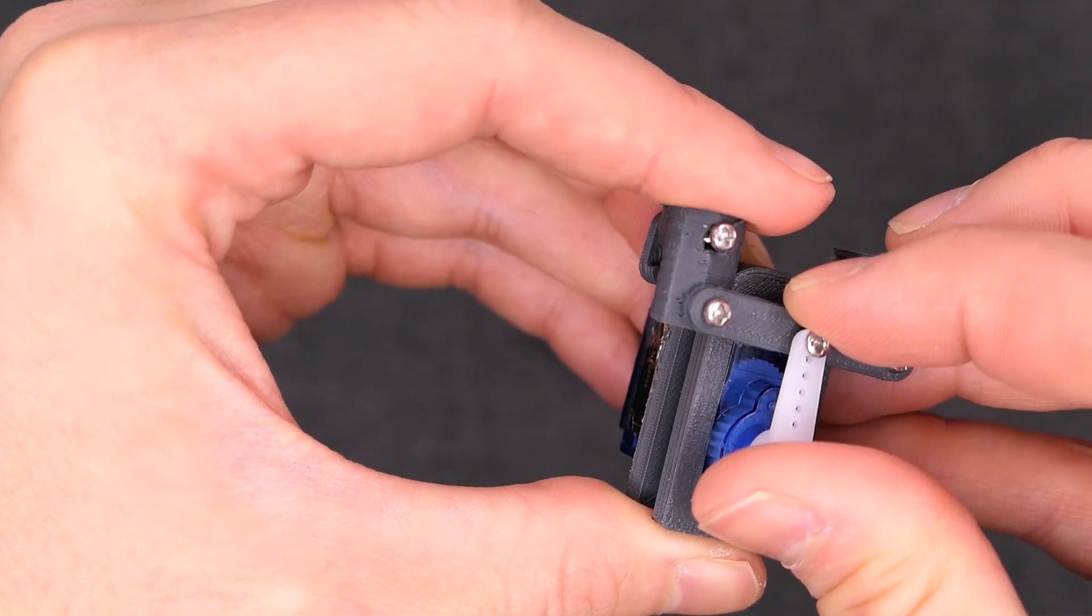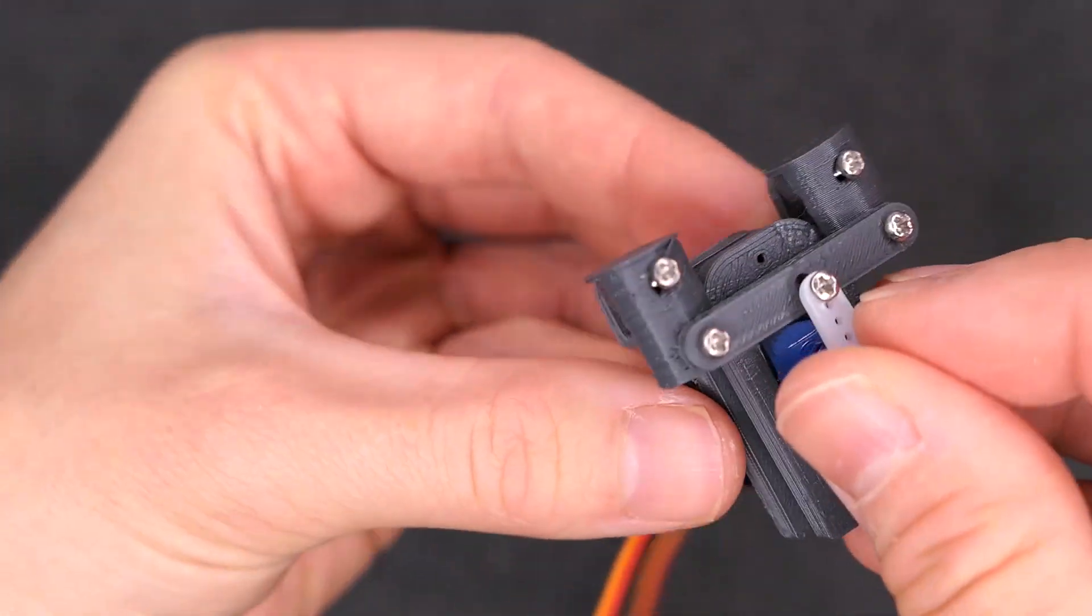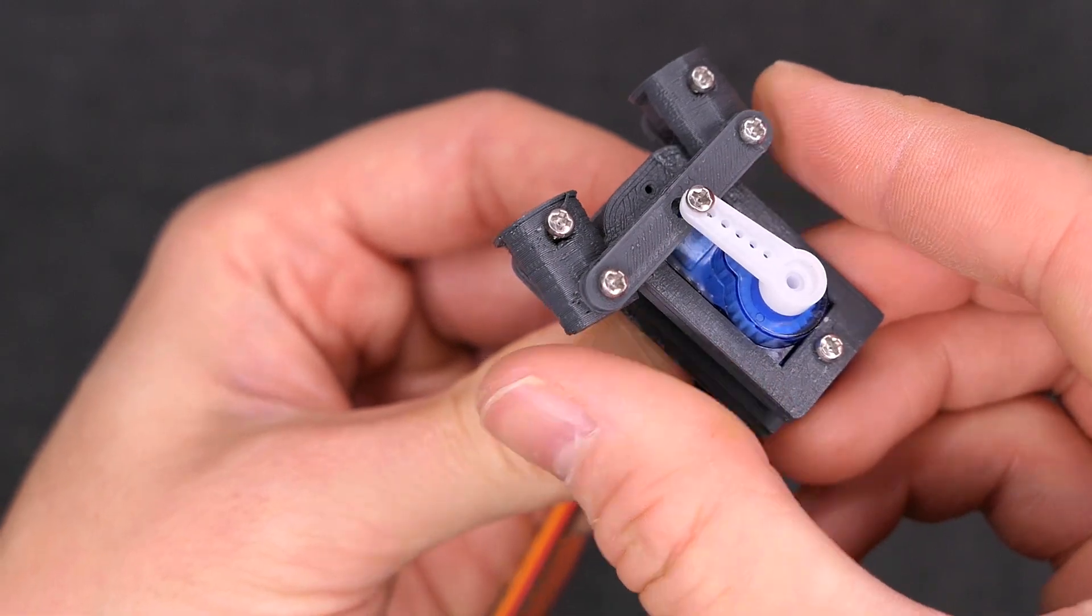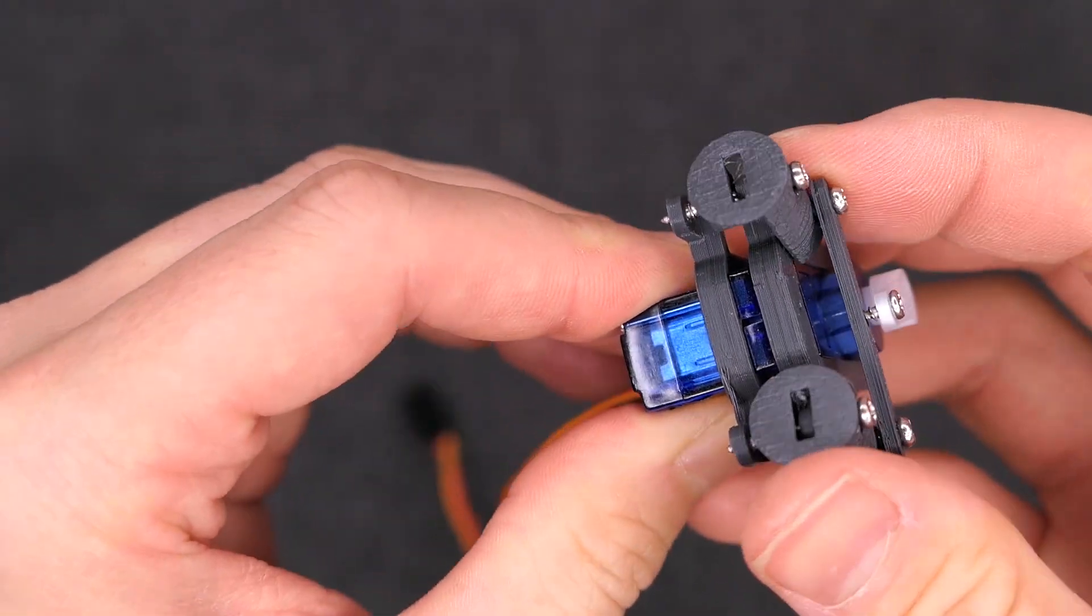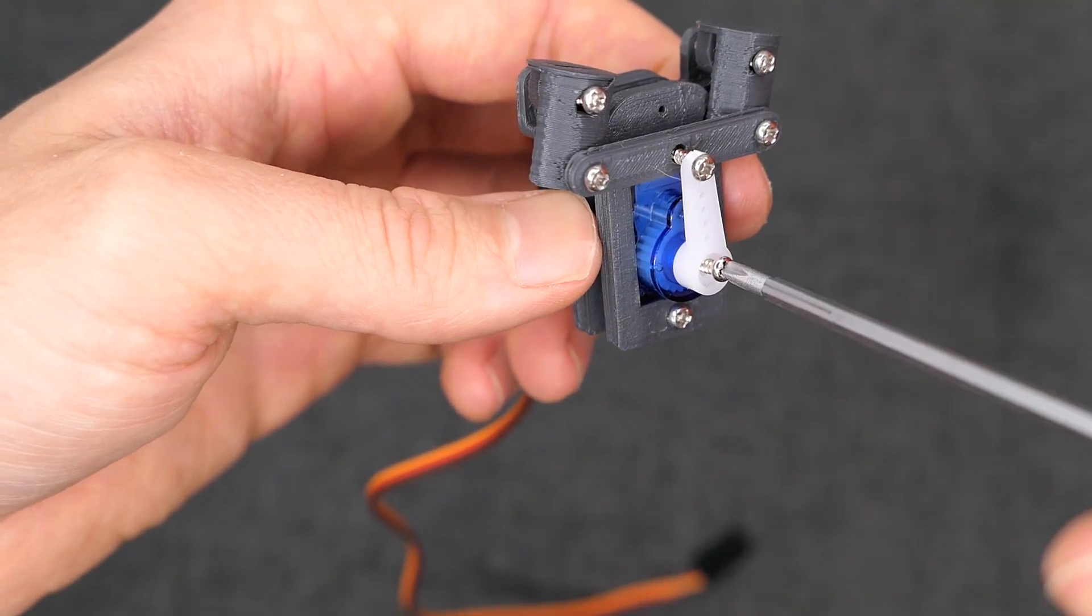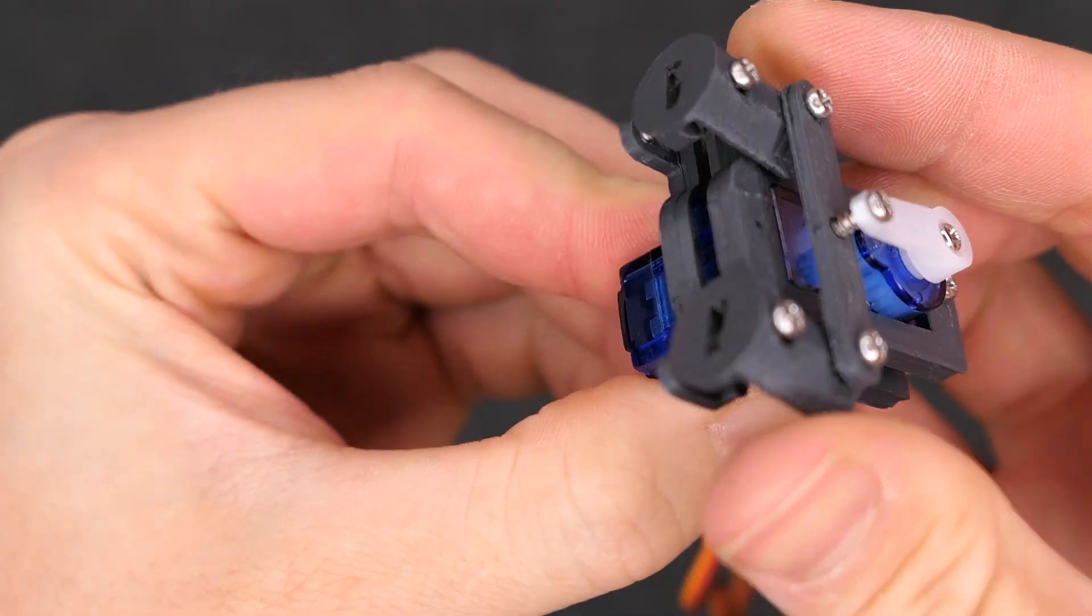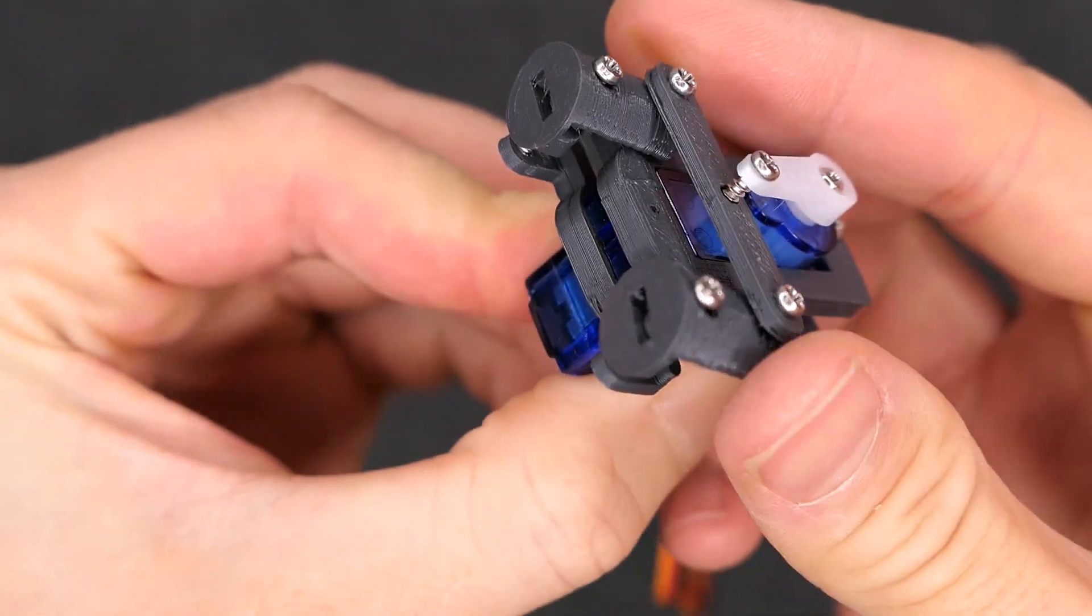Place this on top of the servo and ensure that it is able to swing the arm and move both eye holders. Now secure in place with a screw. Once again check that everything moves freely.